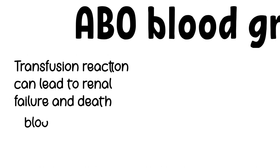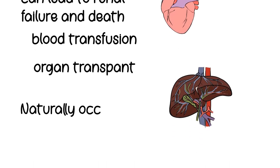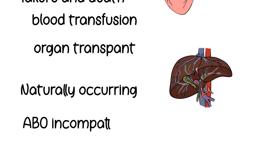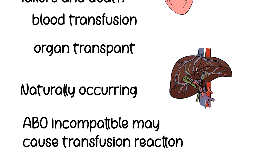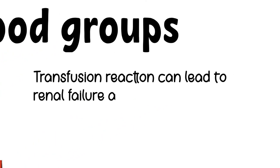ABO blood group is the single most important blood group in transfusions and organ transplant. The ABO antibodies are naturally occurring, which means our body makes anti-A and anti-B or both naturally without having to be exposed to transfusions or pregnancy before. Because of these reasons, transfusing patients with incompatible ABO blood types may cause immediate lysis of donor red blood cells, which can be referred to as transfusion reactions. Transfusion reactions can lead to renal failure and death.